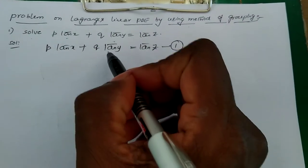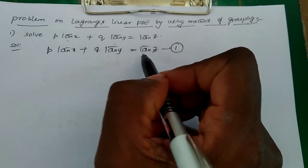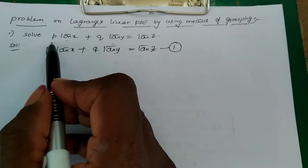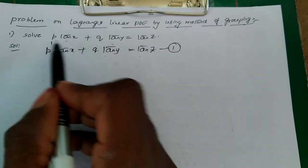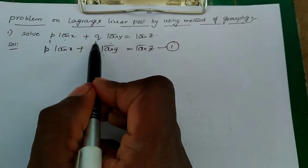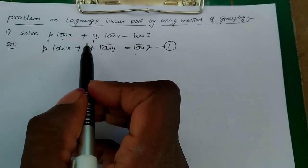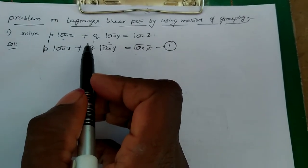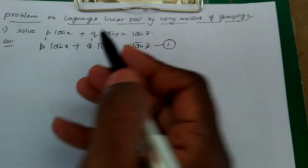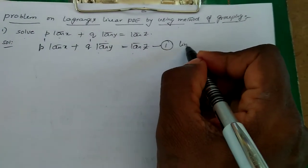Now we check whether this is linear or non-linear. The given PDE contains P and Q, each with power 1. Also, the given PDE does not contain P and Q in the same term. Thus, it is a linear PDE.